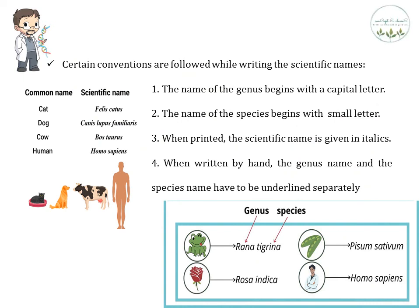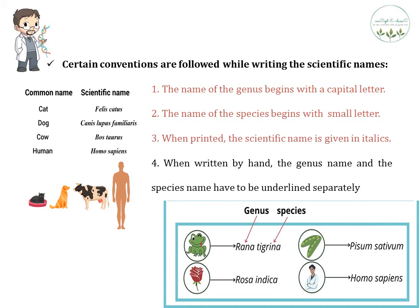There are certain conventions to follow when writing scientific names. The scientific name consists of two parts: the first is the generic name (genus), which begins with a capital letter; the second is the species name, which begins with a small letter. When printing, the scientific name is written in italics. For example, the scientific name of a cat is Felis catus and of a human is Homo sapiens. When writing by hand, the genus name and the species name must be underlined separately.